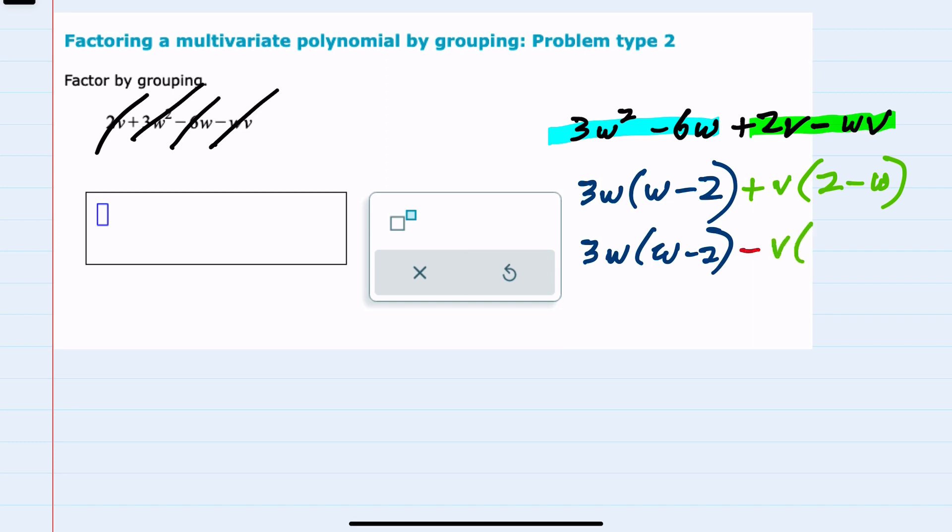That would change the sign of each one of these inside the parentheses. So the positive 2 becomes negative, and the negative w becomes positive. So I can write the positive w first, and then the negative 2.